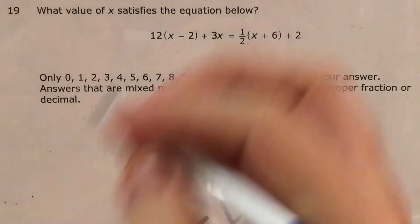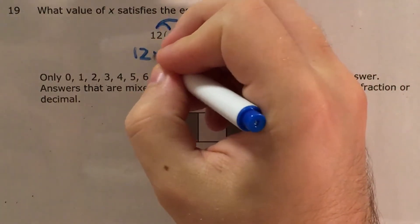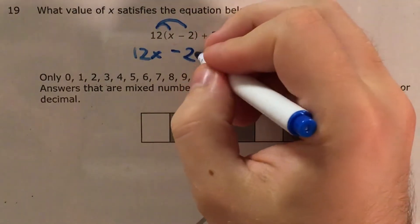So let's go ahead and start working through this, and we'll start with the distributive property. I'll remind myself that if I see 12 multiplied by some stuff in parentheses that's being added or subtracted, I need to do 12 times x which is 12x minus 12 times 2 which is 24, and then I left plus 3x alone.